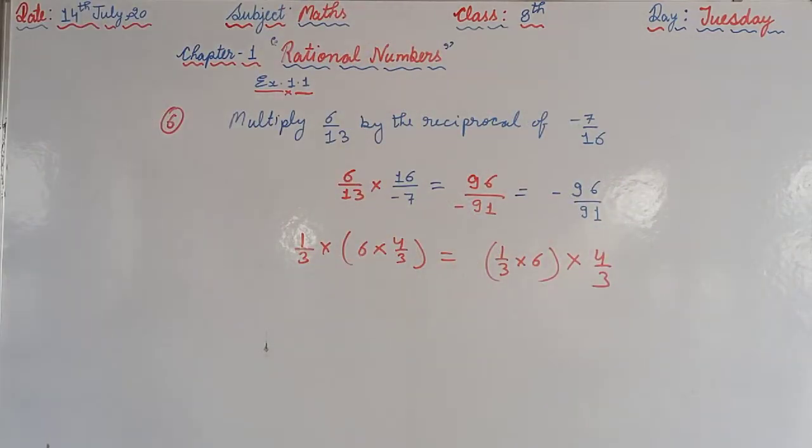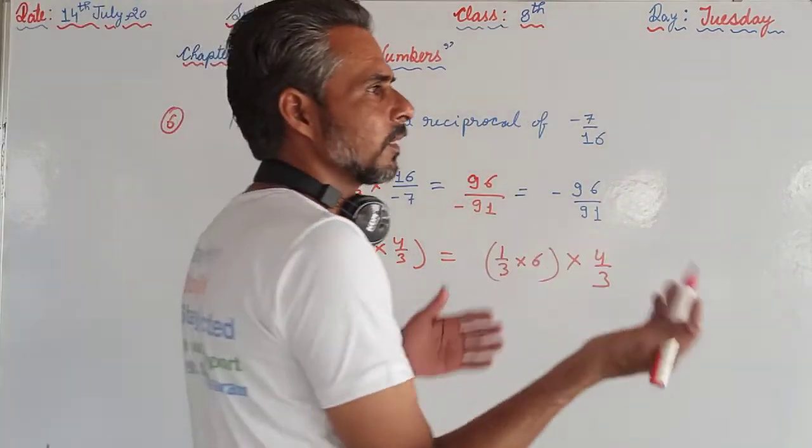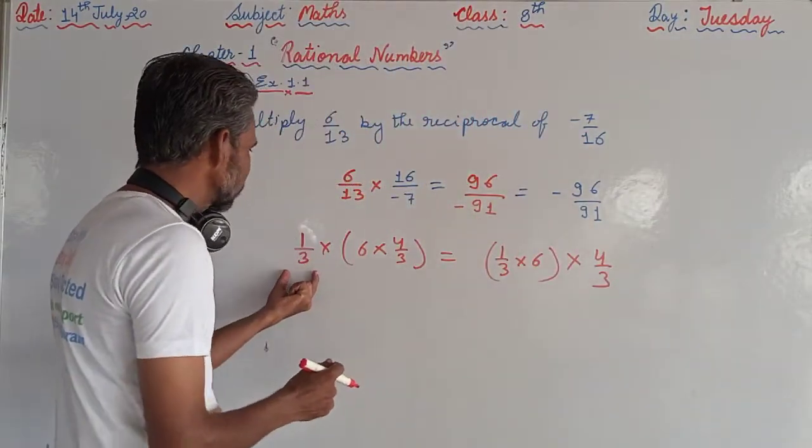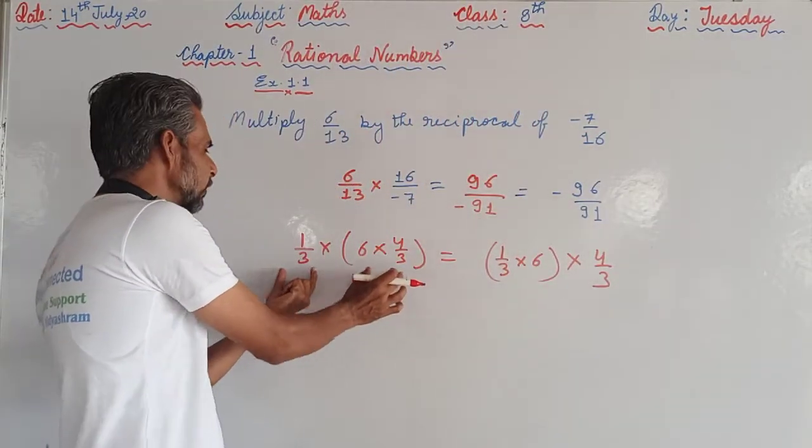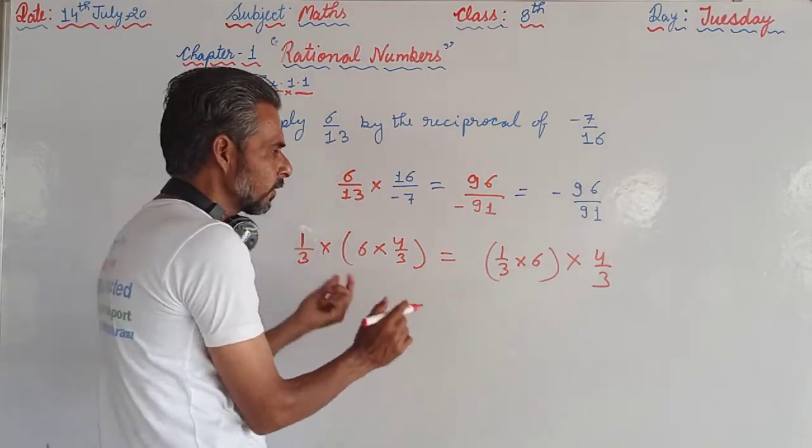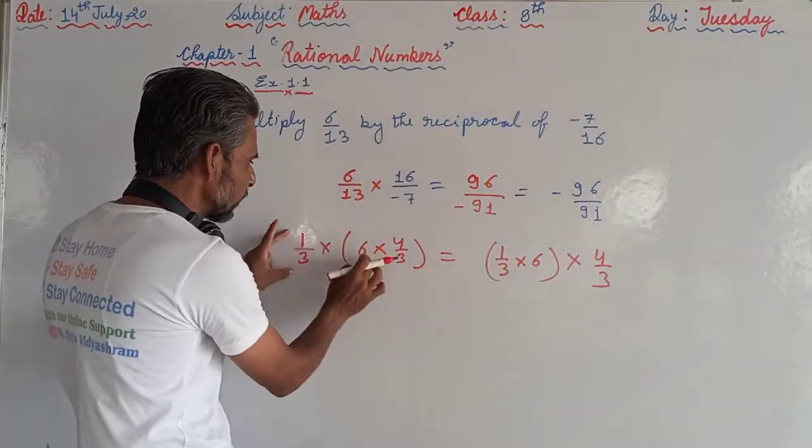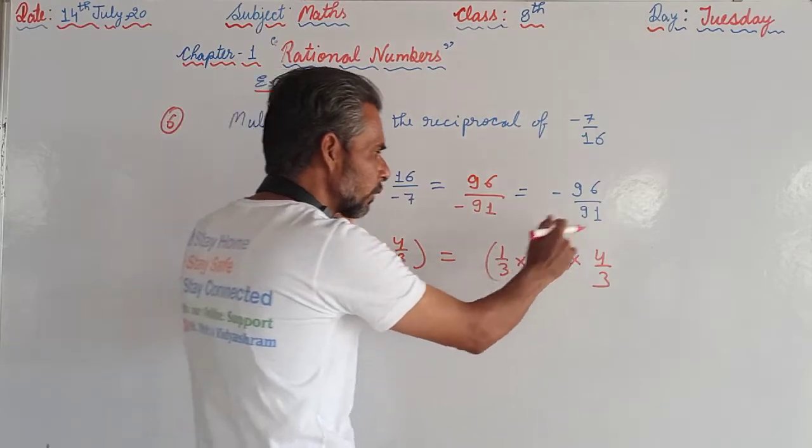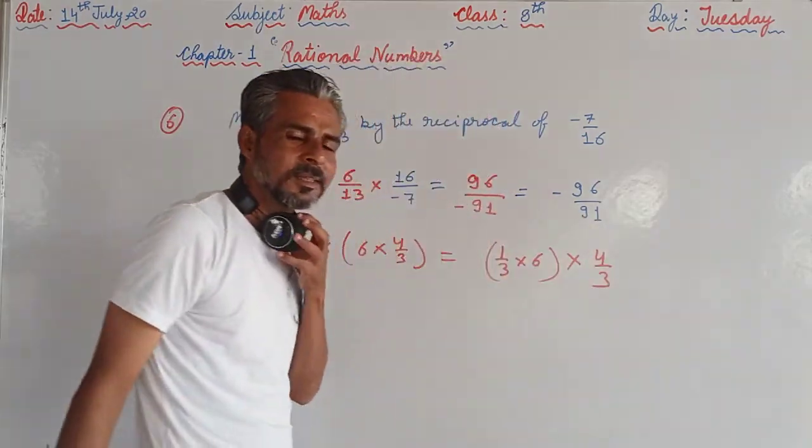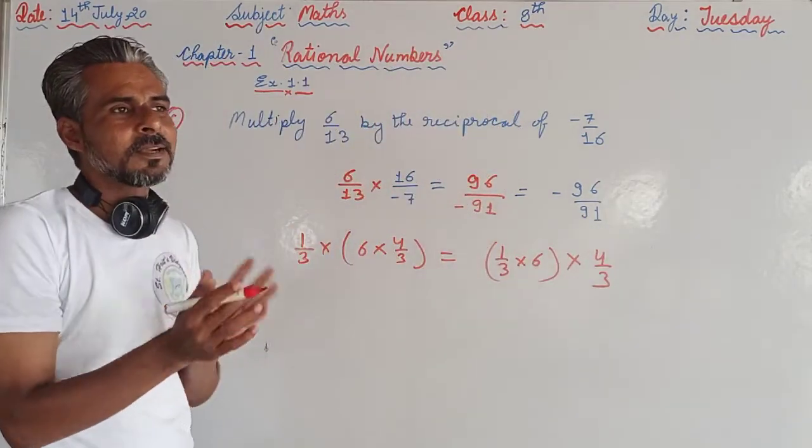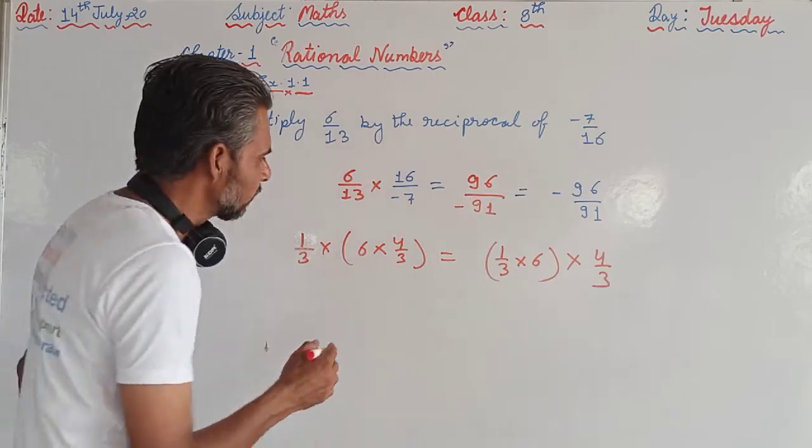So we are changing the pattern. Here first of all we are multiplying this, after that we are multiplying by 1 by 3. Here first we are multiplying 1 by 3 into 6, then we are multiplying by 4 by 3. So we are changing the pattern. So this is associative property.